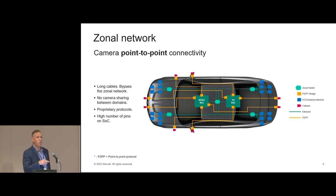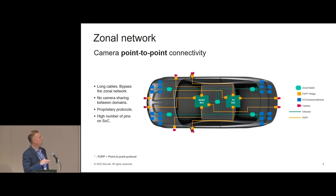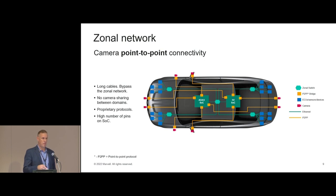In addition, it's very hard — or not possible without significant system manipulation — to share cameras between different domains such as ADAS and infotainment. You end up with separate cameras for each domain or special hardware to connect between them. The proprietary protocol always requires a serializer in the camera and a deserializer chip on the other side to go back to CSI or another video interface. That also means many pins on the SoC — for example, eight cameras using FPD-Link means about 96 pins on the SoC just to connect all the cameras.